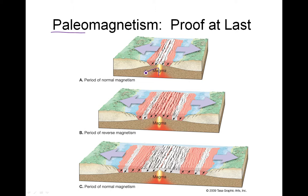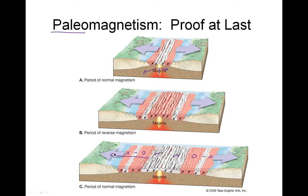Magma comes out — we have our convection cells under here splitting — and magma spreads to either side. If we can prove that the lines of lava are symmetrical on either side of the valley, we've proved that the seafloor has spread apart to either side, like Hess said it did. That's what we're going to try to do today: prove that the lava is symmetrical on both sides.